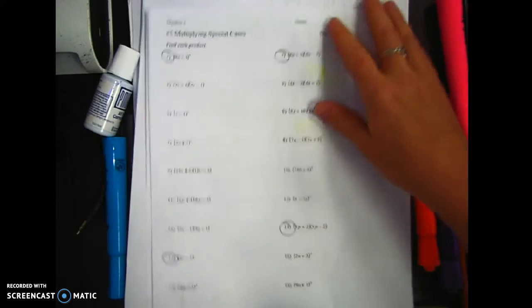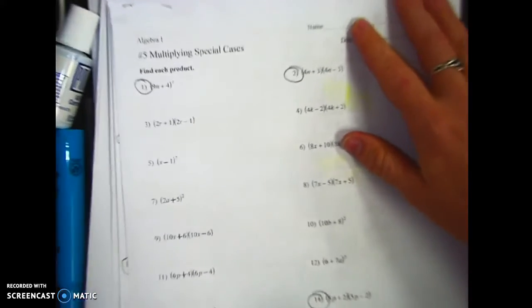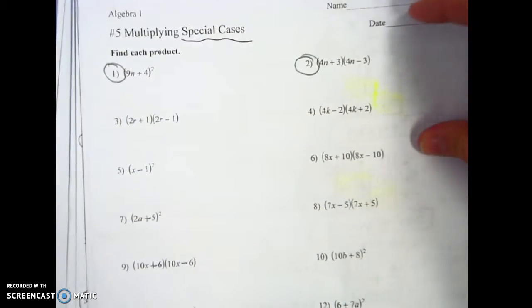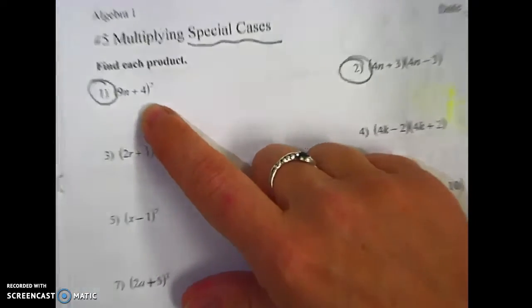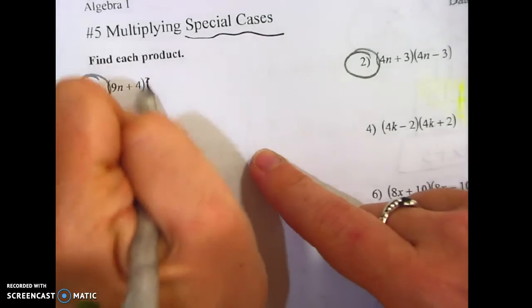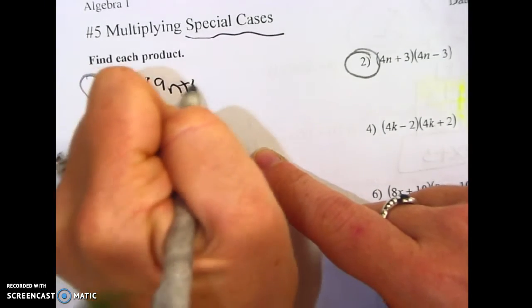So this page is very similar to the previous page, but a little bit different. You're going to notice there's special cases. And what I mean is that if you look at this one, it says 9n plus 4 squared. So what it really means is it's special. You've got to write it two times.